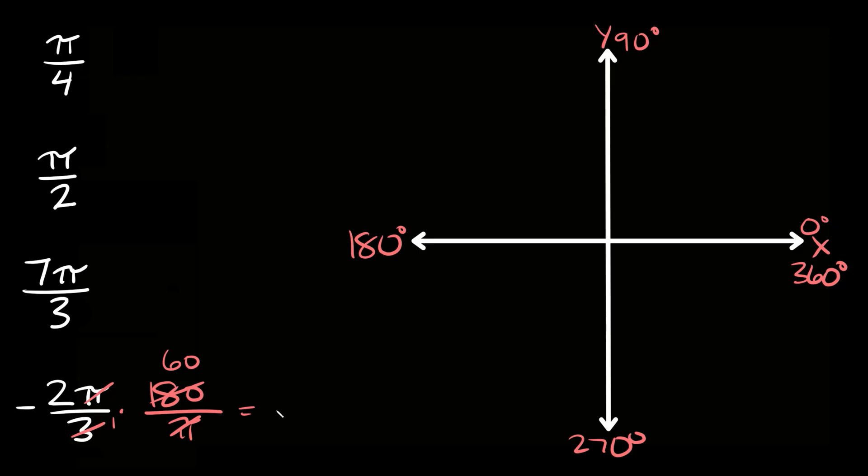So first of all we have our negative sign out here and on top we have 2 times 60. So 2 times 60 and on the bottom we simply have a 1. So again that's not going to change anything. So we have just negative 2 times 60 so this is equal to -120 degrees.